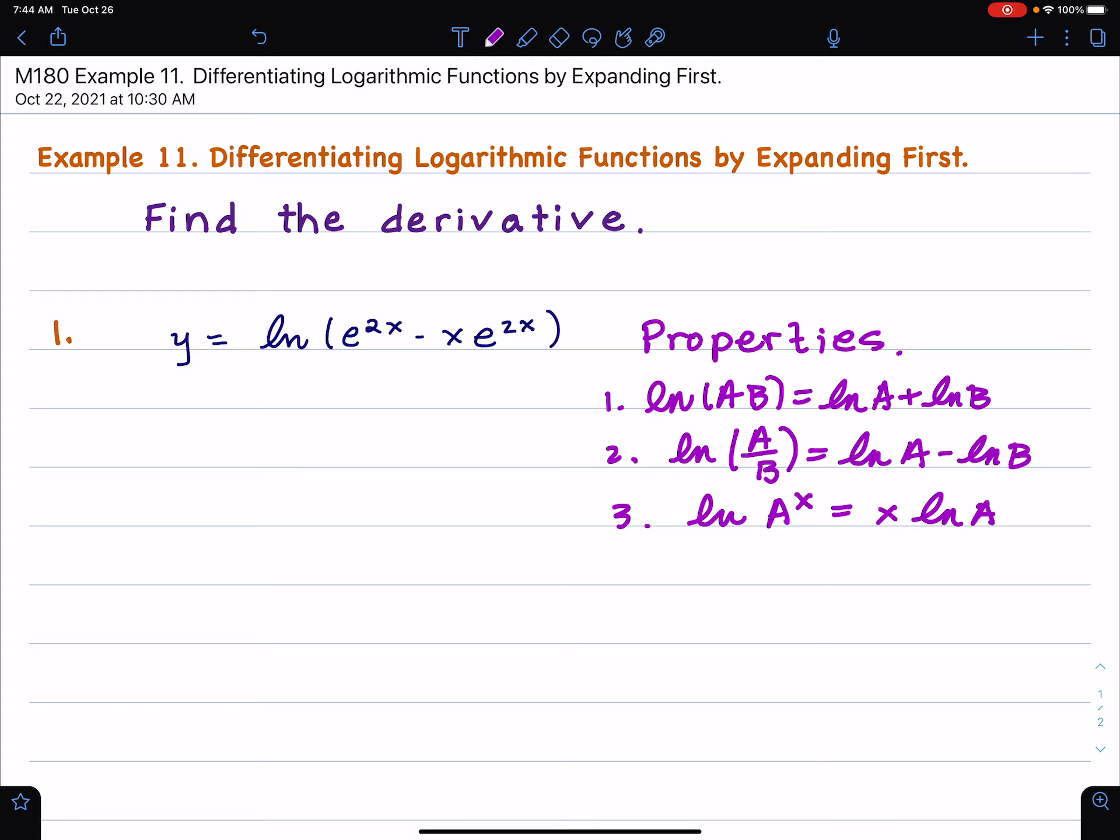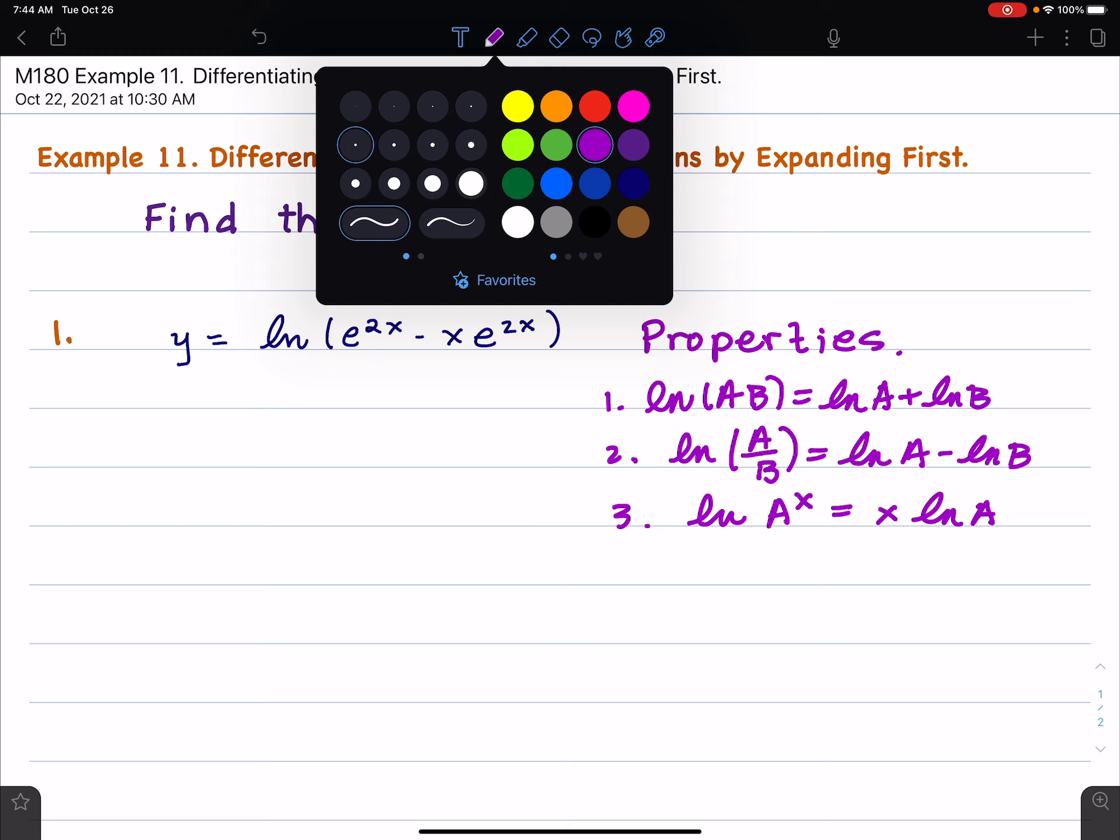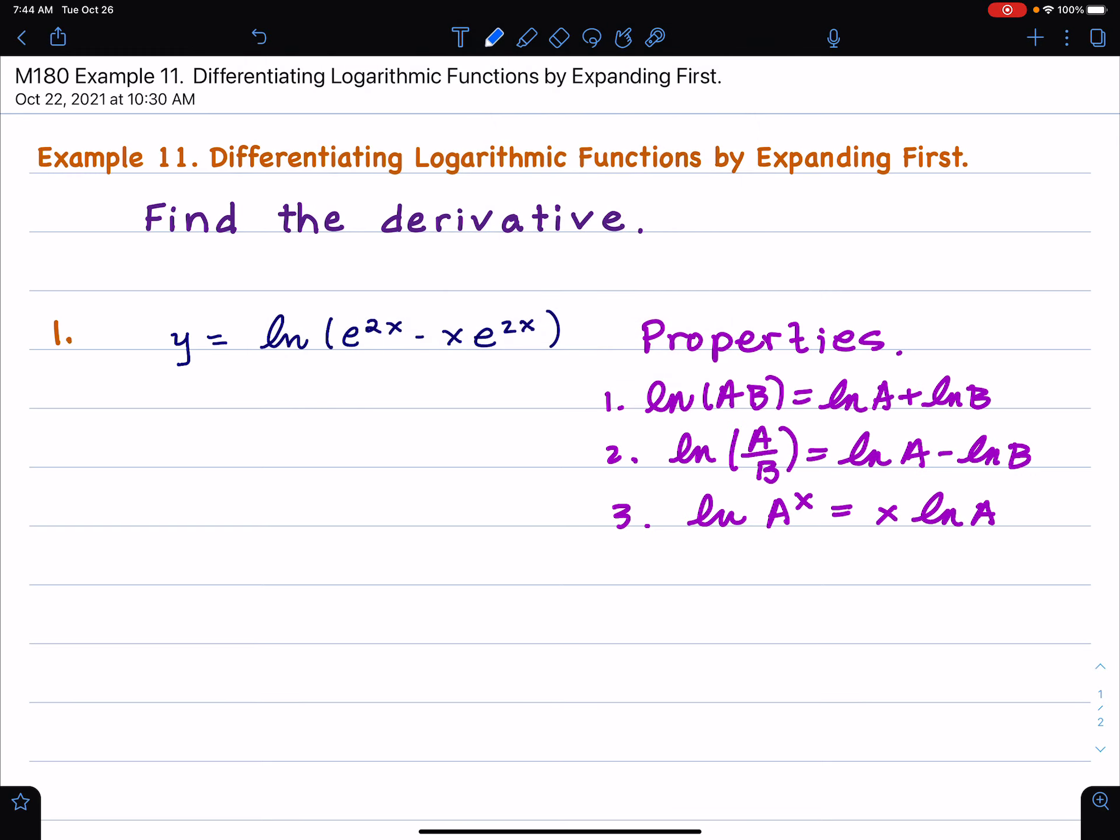So for this problem right here, what I'm going to do is, let's get a good color here, let's use a little brighter blue. So what I'm going to do is, first of all, factor this inside part here, and I get e^(2x) factored out, 1 minus x.